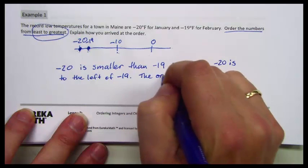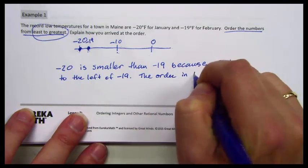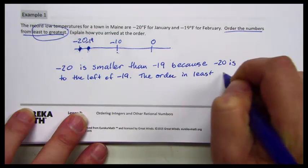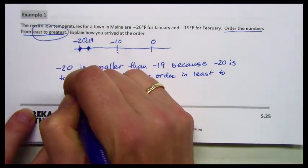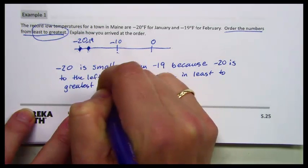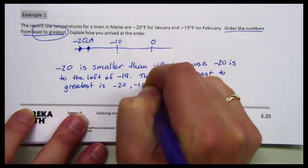And the order from least to greatest is negative 20, negative 19.